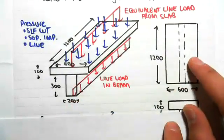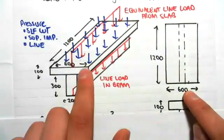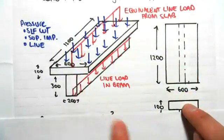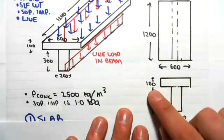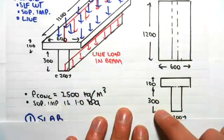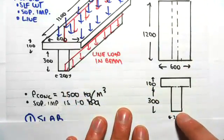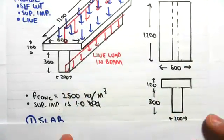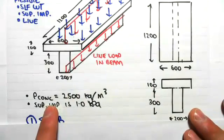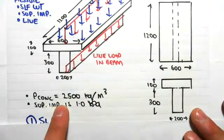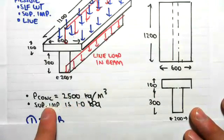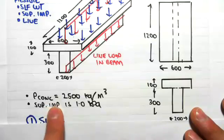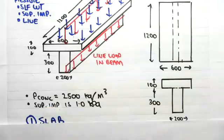In plan view, the slab is 1200 by 600 millimeters. The section through shows dimensions of 100, 300, and 200. We're given the density of concrete as 2500 kilograms per meter cubed, and the superimposed dead load is 1 kPa.